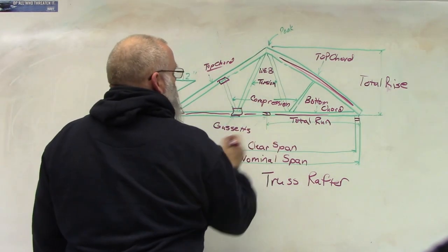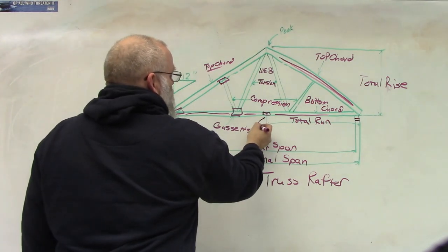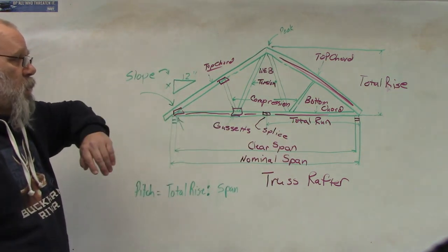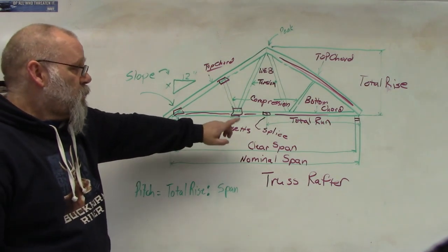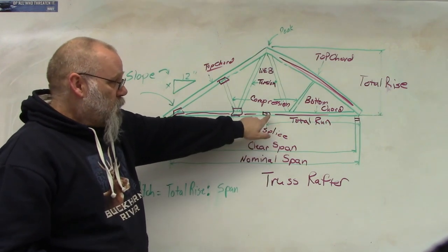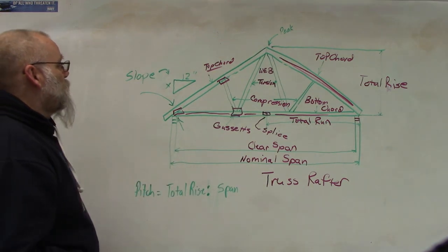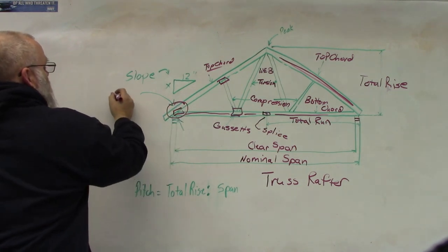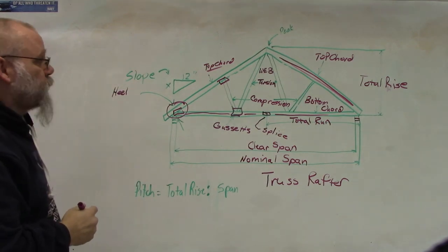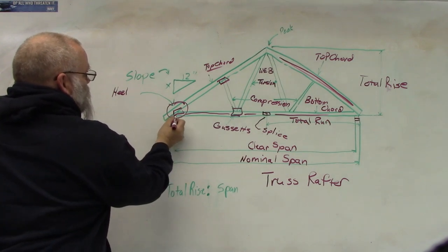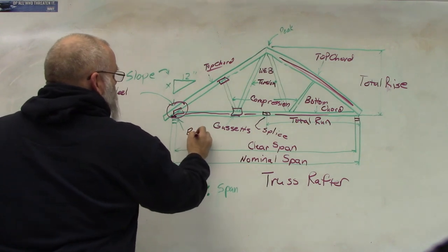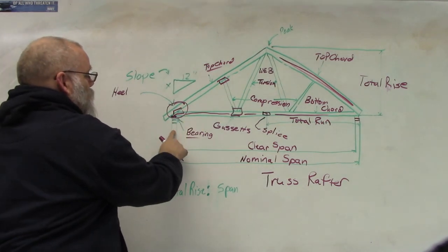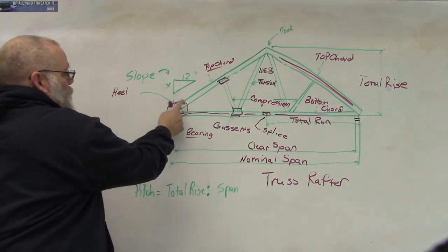Even right here in this middle, that would get a gusset. Now this arrow right here is pointing to what they call the splice. Since most of these are pretty long — 20, 30 feet long — you can't find a 30-foot board, so they make two 15-foot boards and put them together in the middle covered with a gusset. That's called the splice. Over here, this area is called the heel. And where the rafter sits on the top plate is called bearing — meaning that's where the weight is being transferred. The whole area is called the heel.